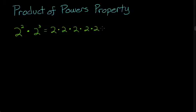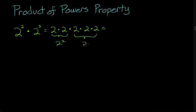As we can see, this is just 2 multiplied by itself a whole bunch of times. The first two 2s — that's your 2 squared. Over here, that's your 2 cubed. And then all together, we've got 2 times 2 times 2 times 2 times 2 — 2 multiplied by itself 5 times, or 2 to the 5th power.